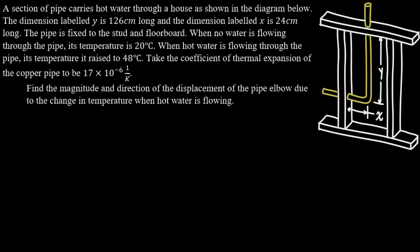The pipe is fixed to the stud and the floorboard so it can't move there at all. And then it says when no water is flowing through the pipe its temperature is 20 degrees Celsius, so roughly room temperature here. And then when hot water is flowing through the pipe its temperature is raised to 48 degrees Celsius.